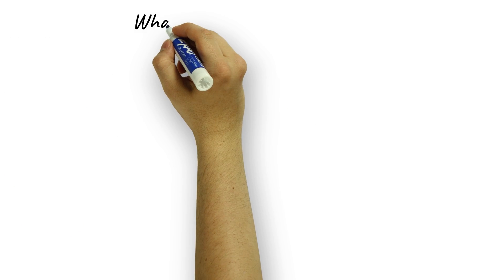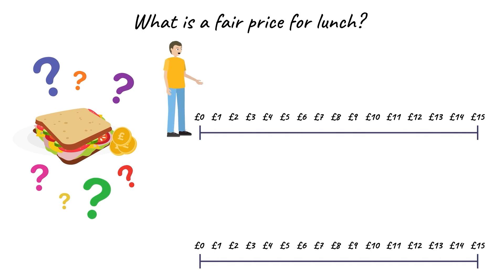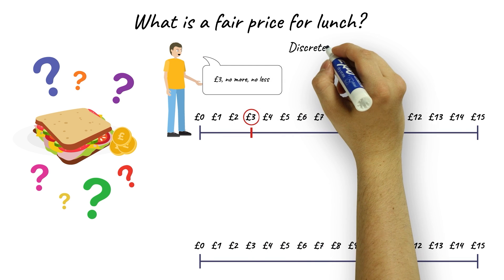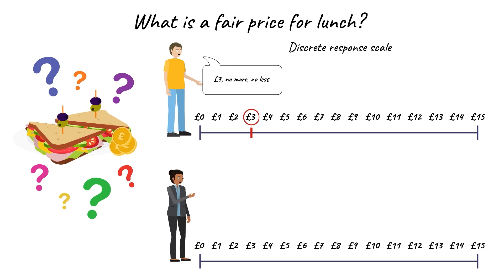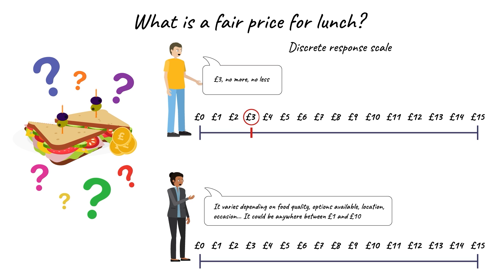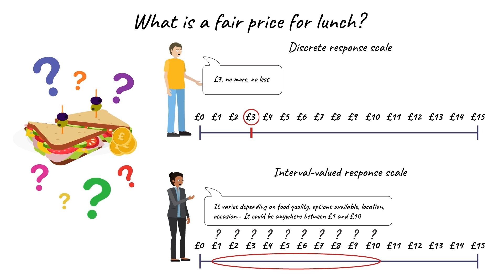For example, what is a fair price for lunch? Someone might say £3 — no more, no less. It's narrow, so a discrete scale or interval can capture this. Someone else might say it varies depending on food quality, options available, and location — it could be anywhere between £1 and £10. This can't be captured with a discrete scale, but it can with an interval.